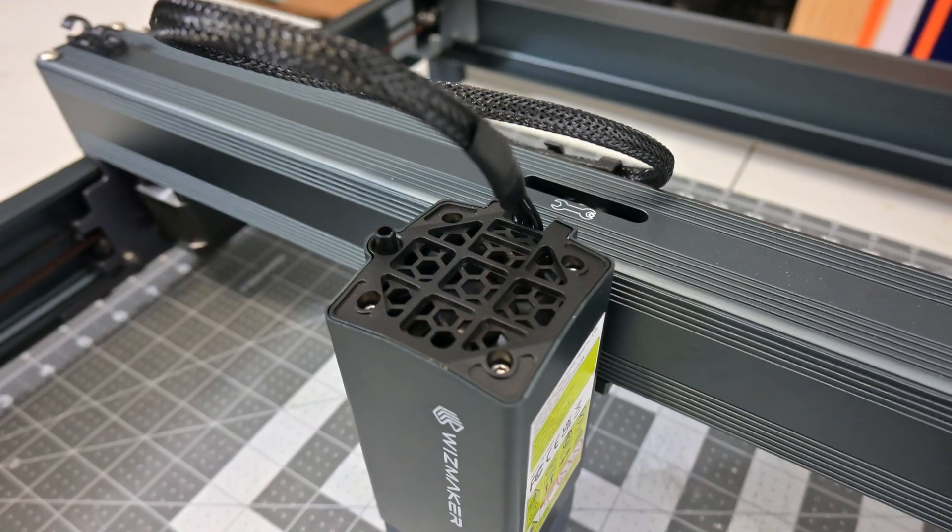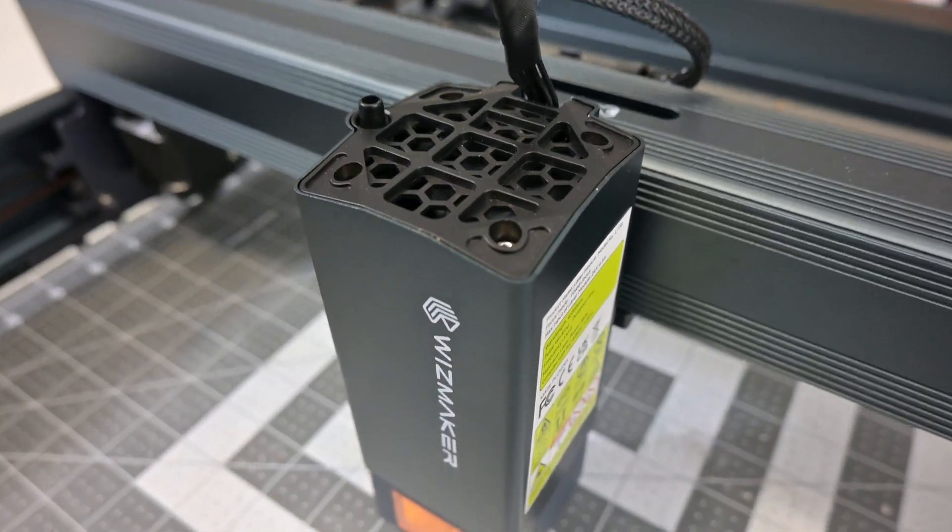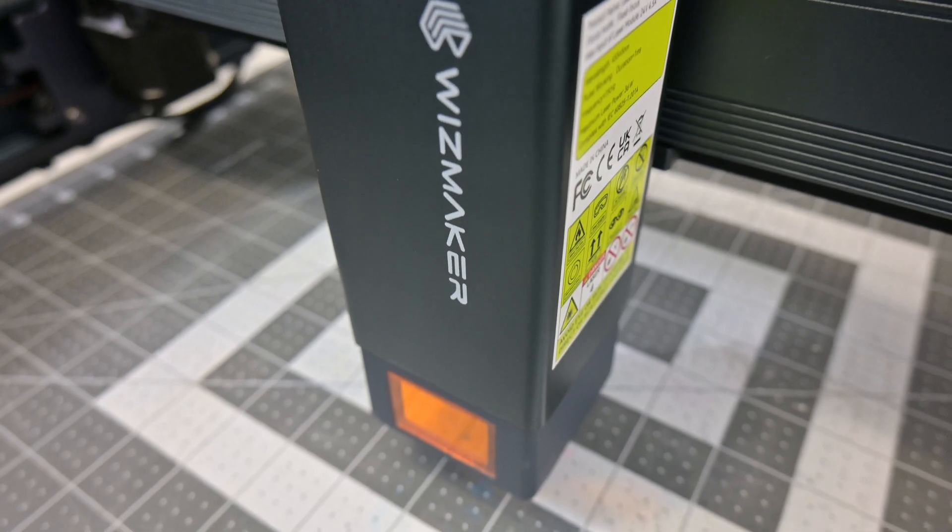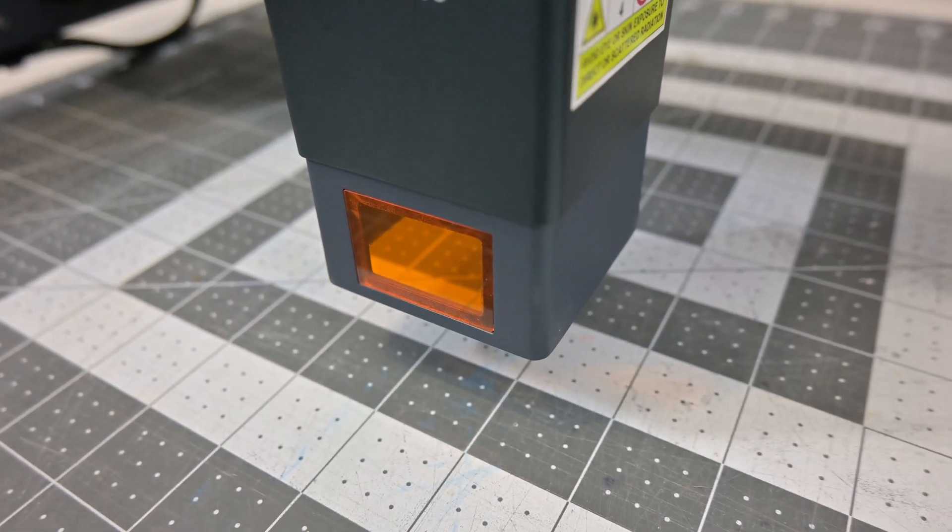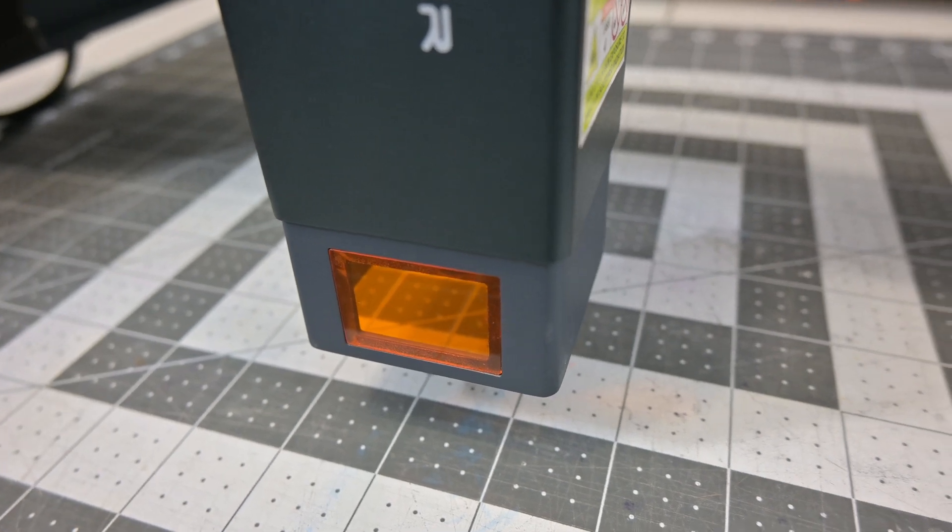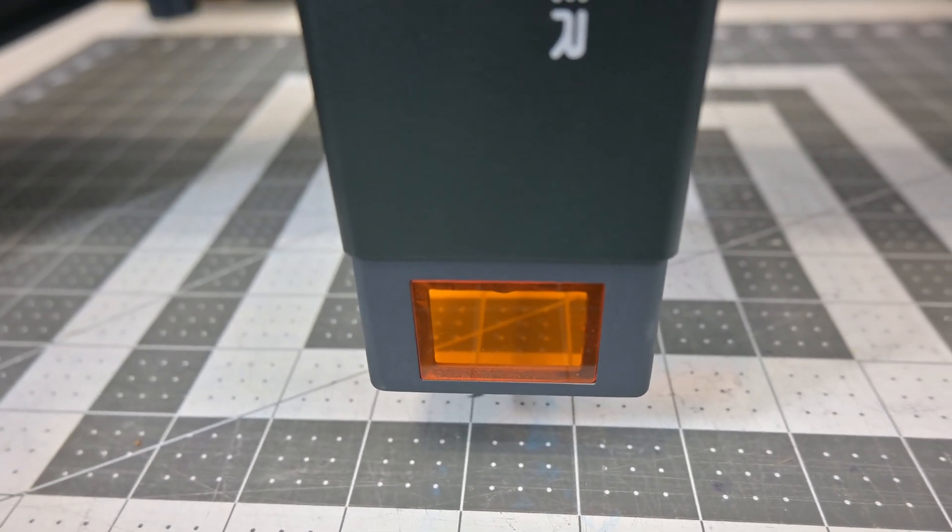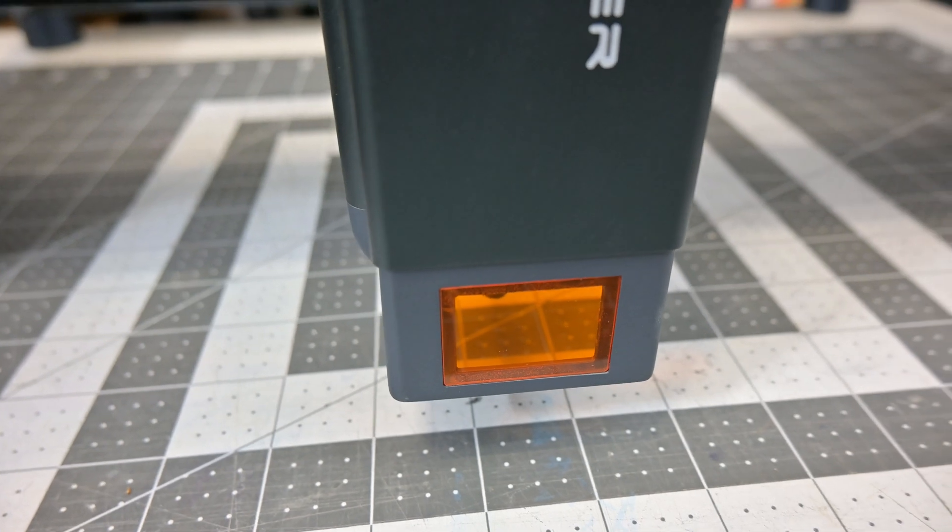On top of the laser is a powerful cooling fan that blows through the unit, both cooling the diodes and helping push the smoke away. The fan is not too loud, and it's comfortable to be around the machine while running without requiring hearing protection. At the bottom is a window that does a good job blocking reflective laser light, and the other three sides are completely blocked off.